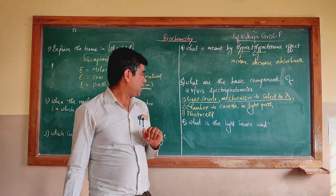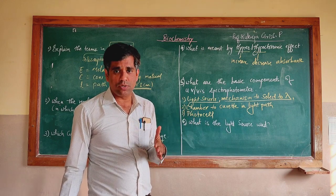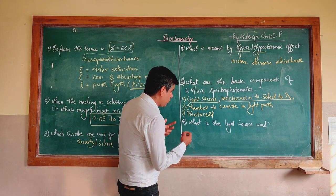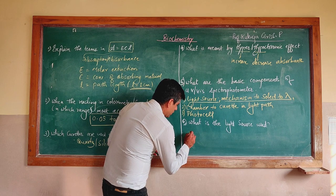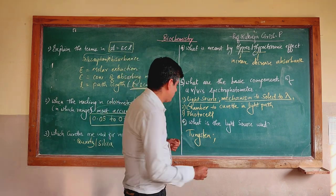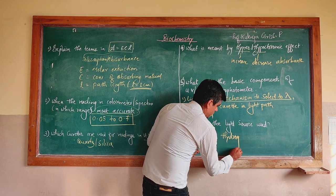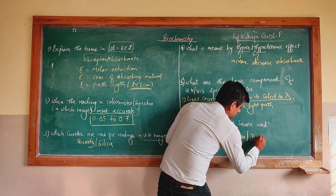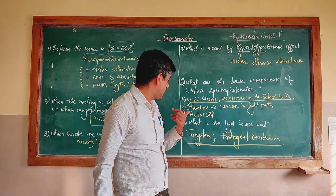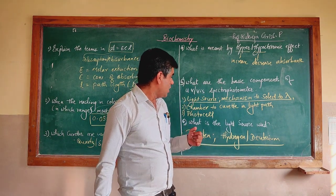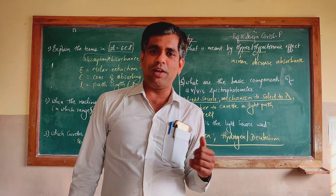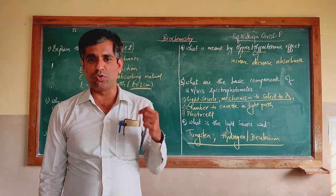Regarding the light source used: for the visible range, a tungsten filament lamp is used. For UV light, a hydrogen lamp or deuterium lamp serves as the light source. So for visible range use tungsten, and for UV range use hydrogen or deuterium lamps. Stay tuned for more on microbiology and biochemistry with professor Girish Kukreja. Thank you.